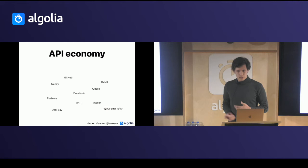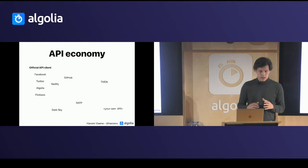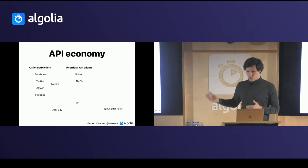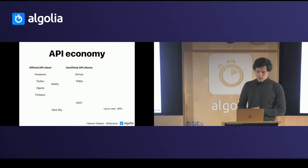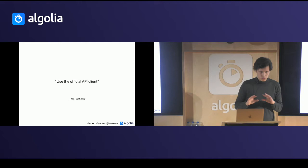Especially your own API will be important here, because that's what we will be talking about. We can organize these in three main categories. The first one is the ones that have an official API client, like Facebook, Twitter, and Algolia. Then you have a bunch which mostly have unofficial API clients, at least for JavaScript. While GitHub does have official API clients, they're only for Ruby. And then the rest of them are pretty much just a REST API — just a URL and you can request stuff from it. For most cases, you should just use the official API client if it exists.